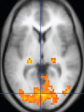Cardiac MRI is complementary to other imaging techniques, such as echocardiography, cardiac CT, and nuclear medicine. Its applications include assessment of myocardial ischemia and viability, cardiomyopathies, myocarditis, iron overload, vascular diseases, and congenital heart disease.